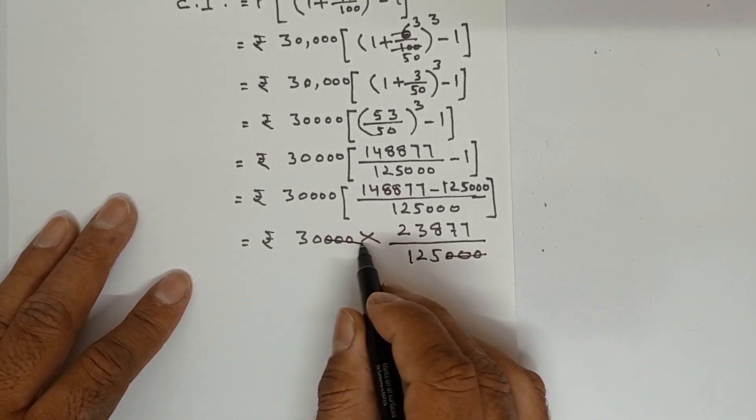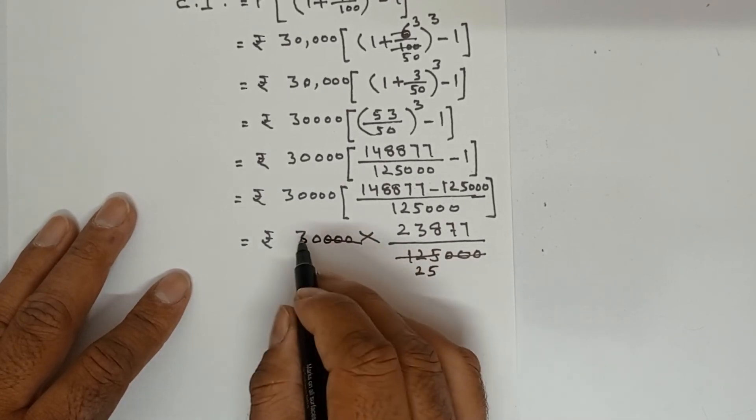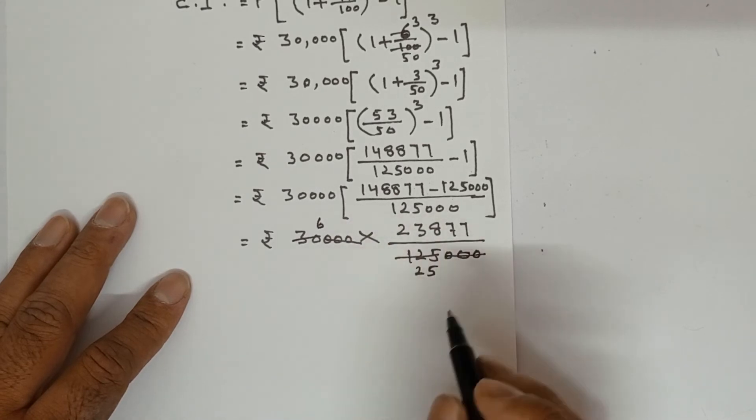So 3 zeros will cancel with 3 zeros. 5, 2s are 10, 12, 5, 5s are 25, 5, 6s are 30.